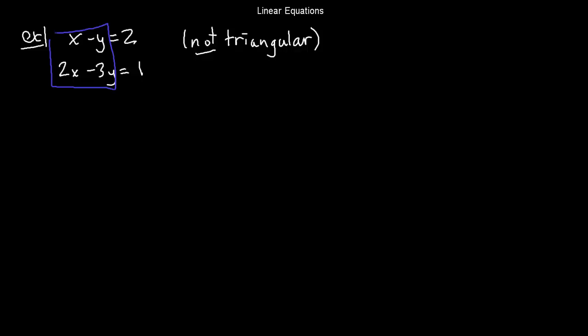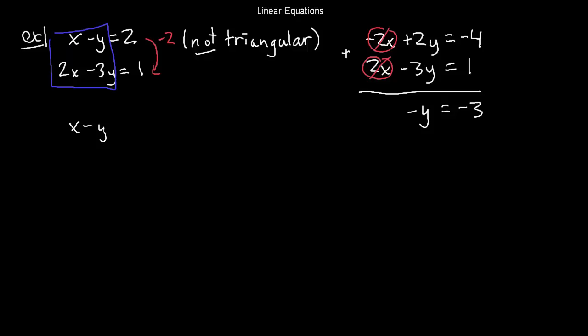So the strategy here is to multiply the first equation by some number and add the result to the second equation. In this case, we'll multiply by minus 2, and when we do that to the first equation, you get the equation minus 2x plus 2y equals minus 2. And when I add that to the equation 2x minus 3y equals 1, I'm going to add these two equations and use the result to replace the second equation. Well, you see that when I add these equations together, the 2x and the minus 2x cancel out, and what I'm left with is minus y equals minus 3. So my new system of linear equations looks like x minus y equals 2. That first equation is unchanged. And minus y equals minus 3. And this is a happier system of equations because it's in this upper triangular form.